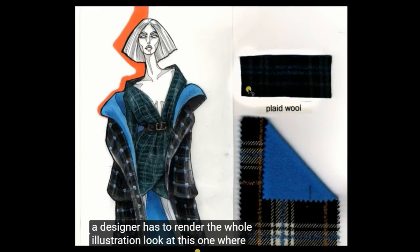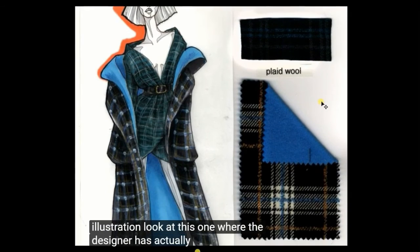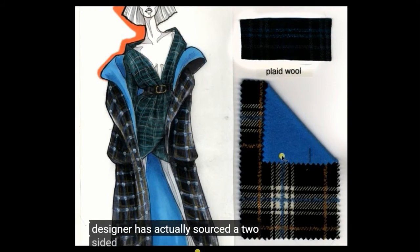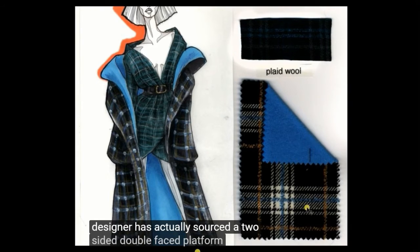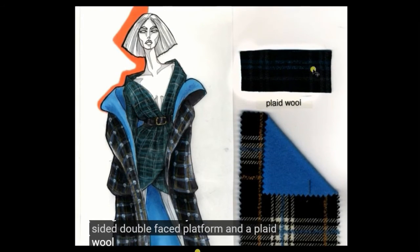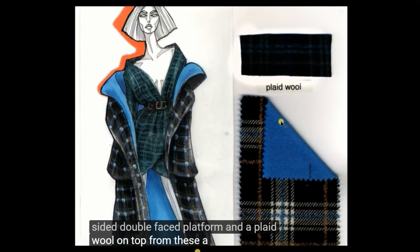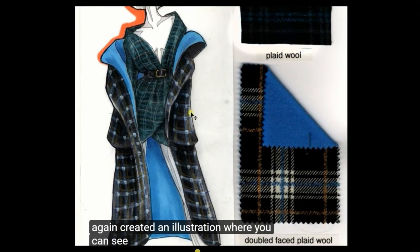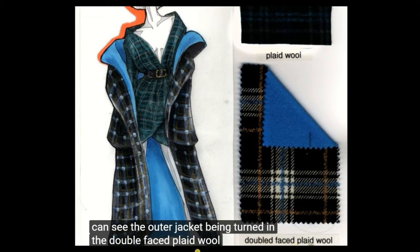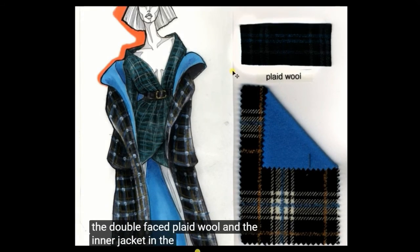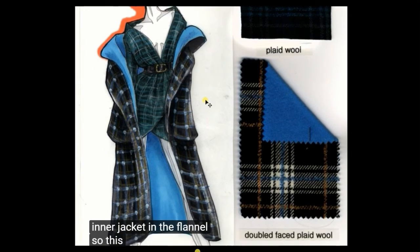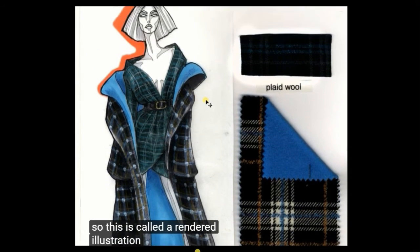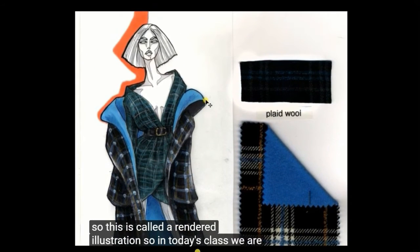Look at this one, where the designer has actually sourced a two-sided double-faced plaid wool and a plaid wool on top. From these, a designer has again created an illustration where you can see the outer jacket being done in the double-faced plaid wool and the inner jacket in the plaid wool. So this is called a rendered illustration.